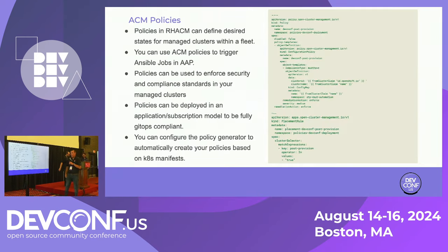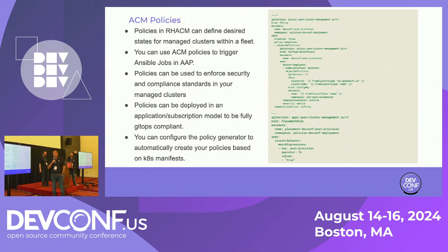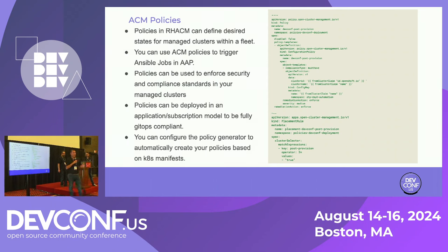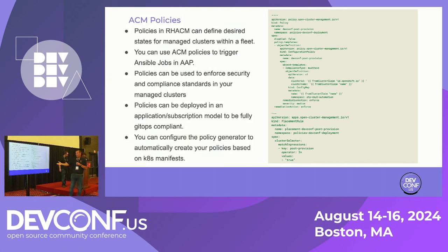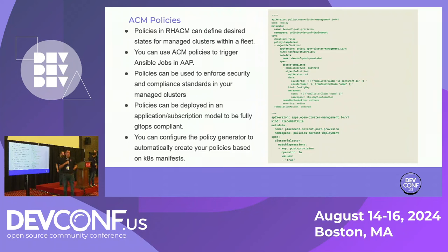Let's talk about what ACM policies are and how they help manage your clusters. An ACM policy, plain and simple, just defines the desired state of your fleet of clusters. You can write a policy to install an operator, or in our case, trigger a post-deployment. All you need is some type of selector — we chose a label selector, but there are many other choices. It will apply to either a single cluster, all the clusters in your fleet, or just a group. You can have one giant policy or hundreds of different policies — it's up to you how you want to manage your fleet.